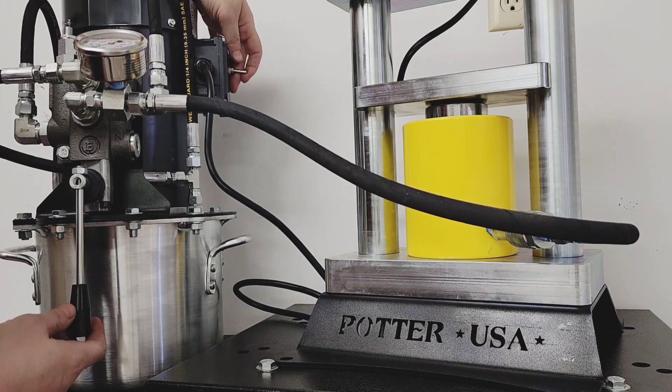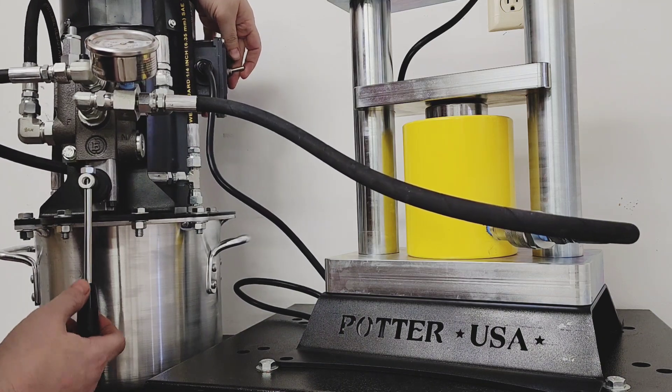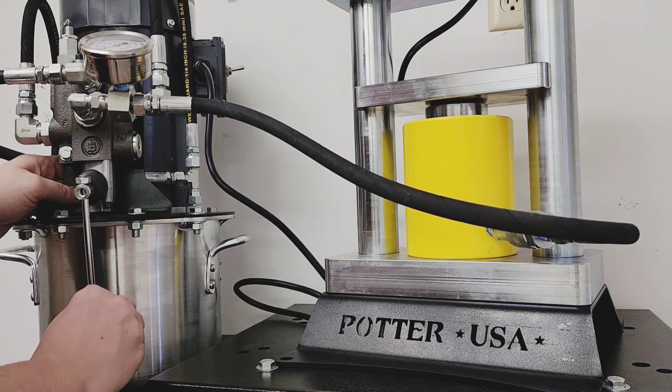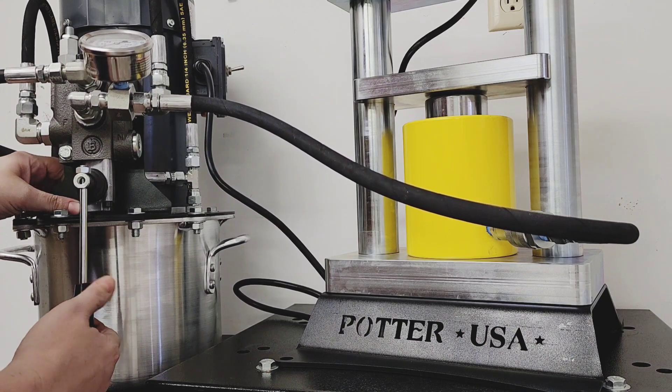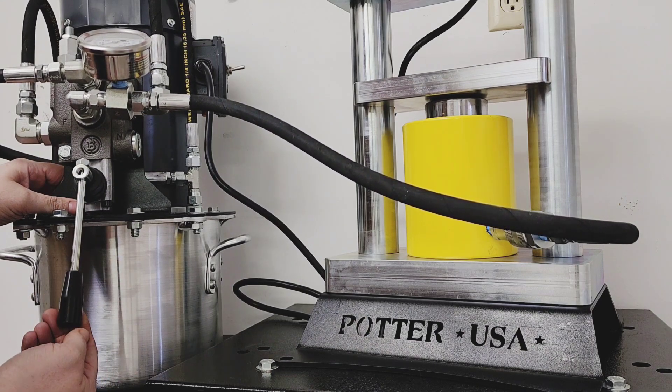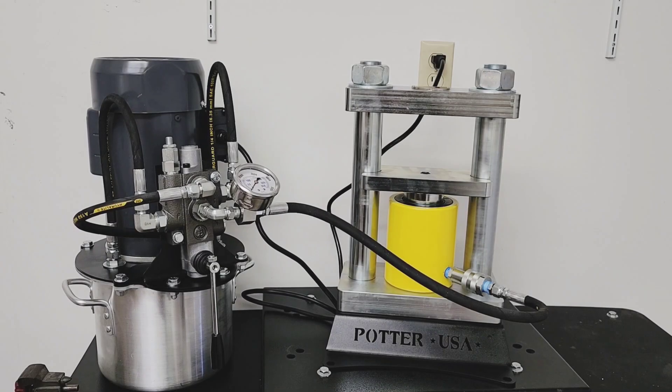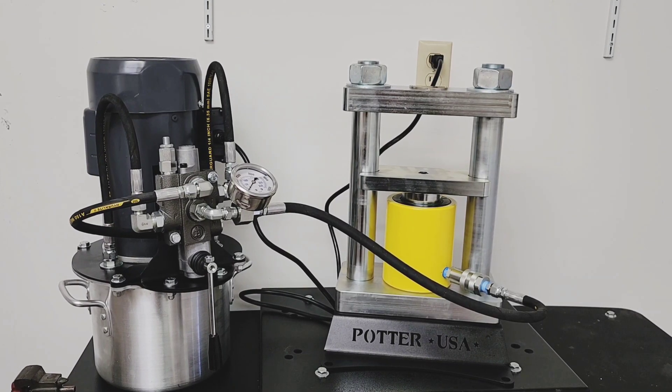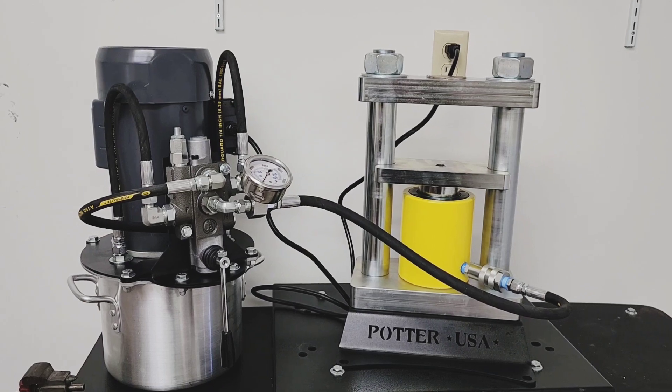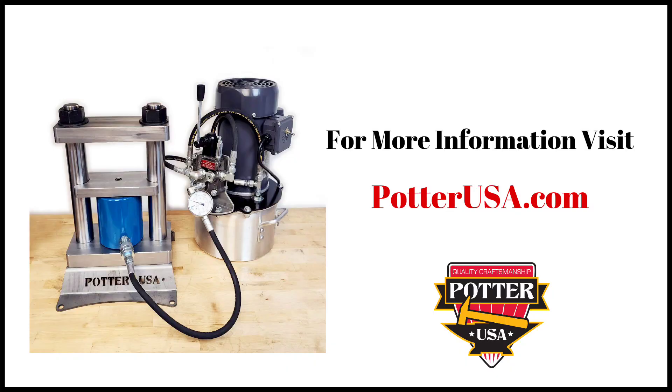If you find that the pump is slightly jerky or jumpy when you first turn it on, you can place a piece of gasket material or other sort of rubber anti-skid material underneath the pump. And that's how easy it is to set up the electric Rincon press from Potter USA. Please visit our website for more information.